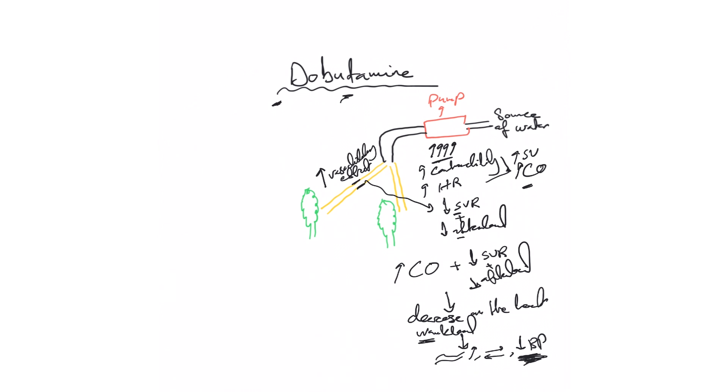Dobutamine should be given through a central line. The dose usually starts 2.5 mcg per kg per minute. Avoid using when there is outflow obstruction like severe AS and hypertrophic cardiomyopathy.